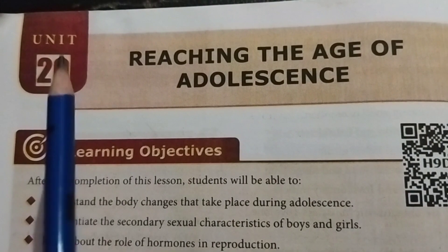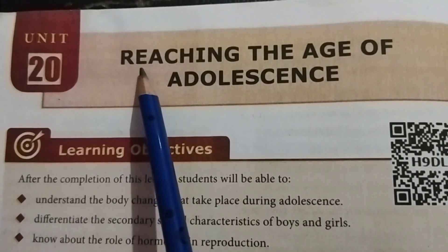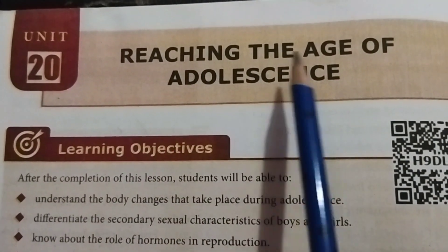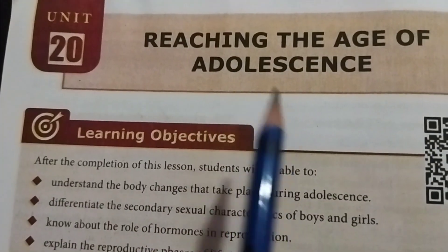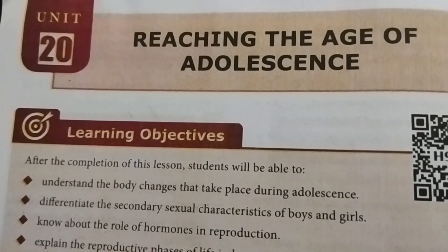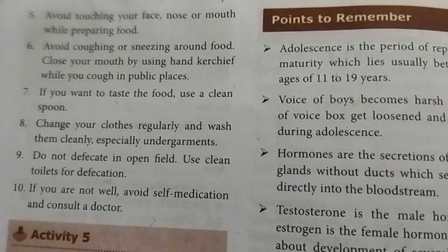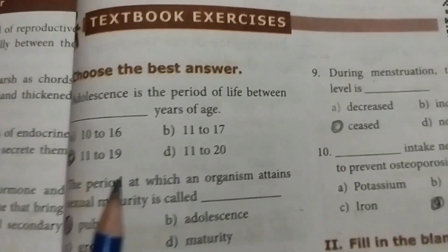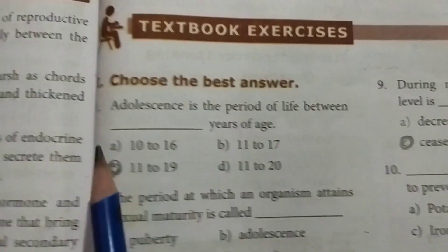Unit 20, Lesson: Reaching the Age of Adolescence. The Book Pack Answers. Take page number 241. Choose the best answer.